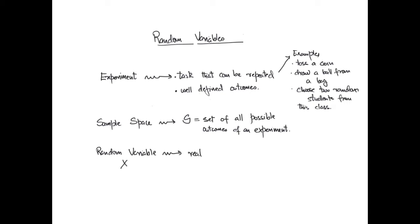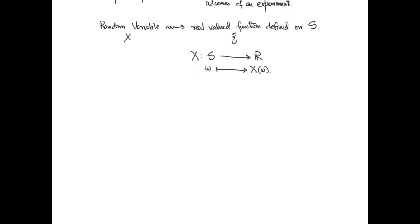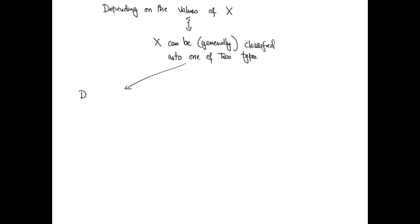A random variable is a real valued function whose domain is the set of all outcomes of an experiment. That is, X is a function going from the sample space of an experiment to the set of real numbers. Depending on the values or the image of X, the random variable can generally be classified into one of two types, which would be either discrete or continuous.